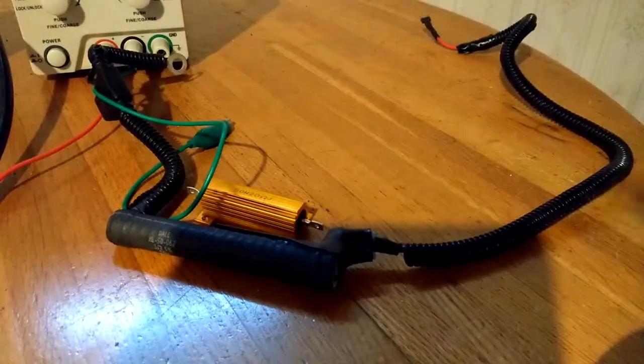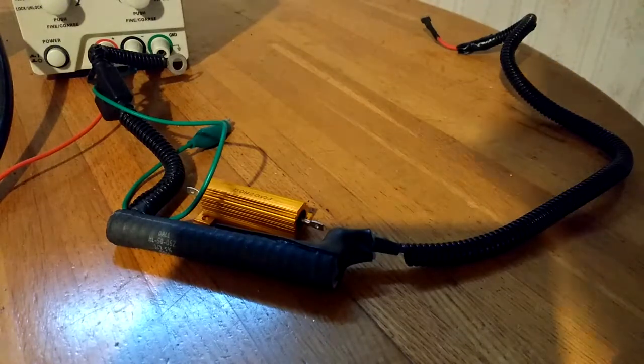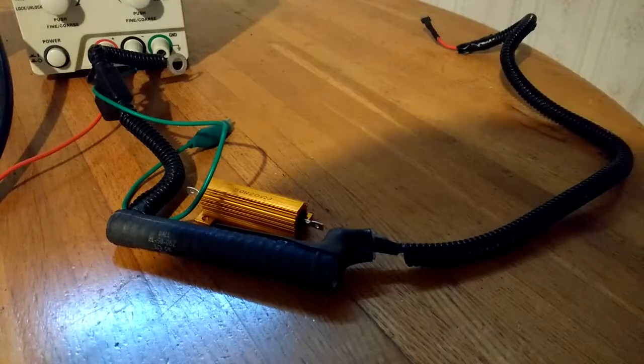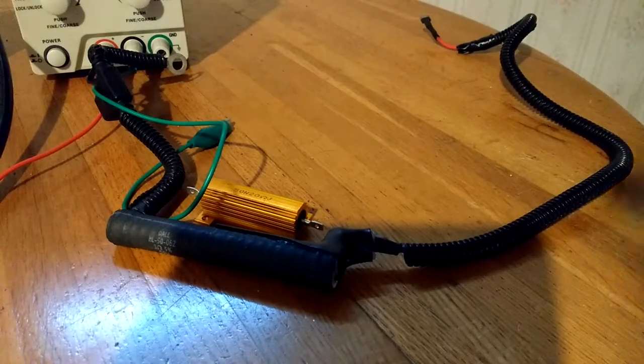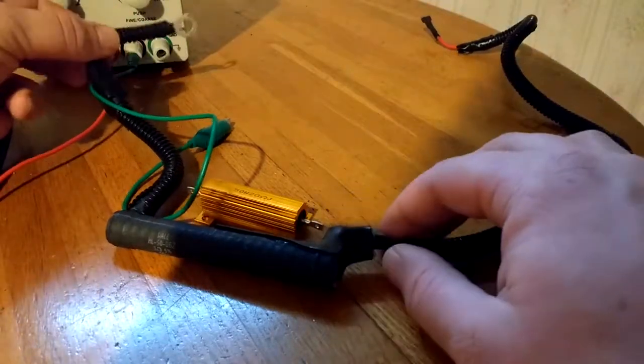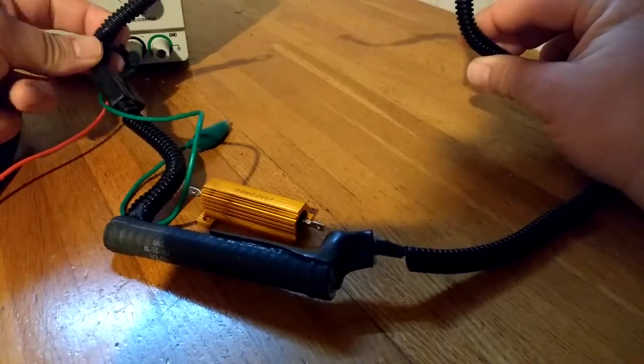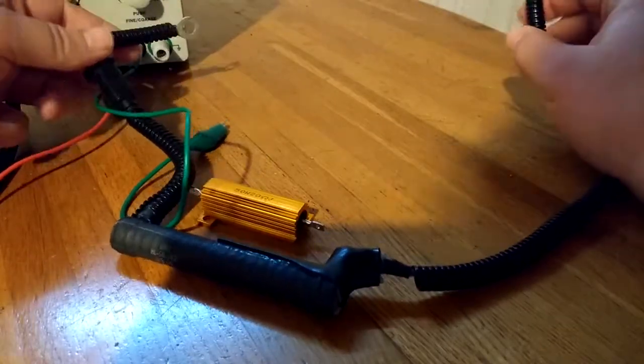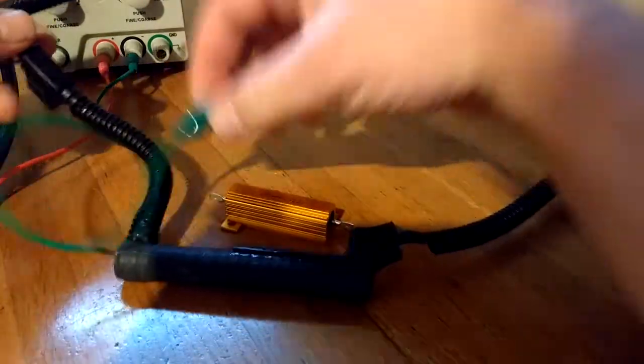So when I've measured the parasitic draw on the car, depending on how long it sits, it seems to be between 15 and 30 milliamps. And I can figure out what the voltage drop would be to my capacitors, basically just with Ohm's Law, but I thought it would be easier to demonstrate it here.